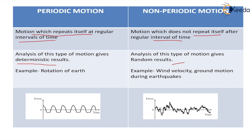You can also see these graphs. Here, the motion is repeating after a certain fixed duration of time. Whereas in this case there is no fixed time — nothing is fixed. The motion may repeat or it may not, and whether it will repeat, and after what interval of time, is not known.